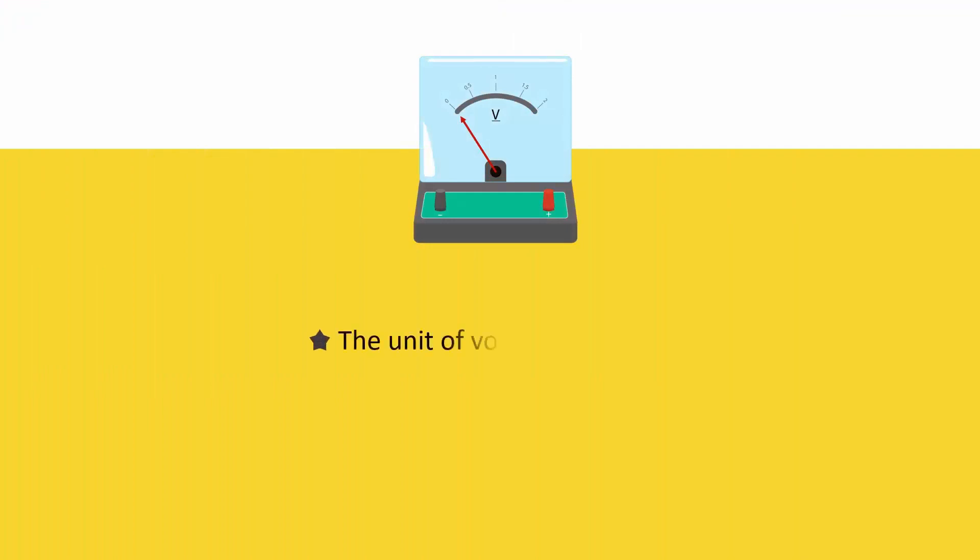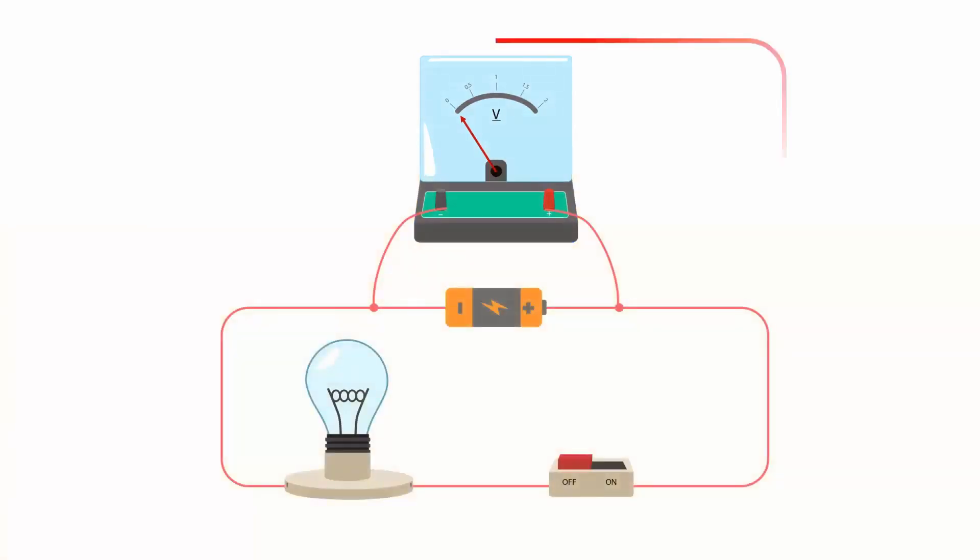The unit of voltage is the volt. This is measured by an instrument called a voltmeter. The voltmeter is connected parallel with the circuit. Its positive terminal is connected to the positive terminal of the battery and the negative terminal is connected to the negative terminal of the battery.